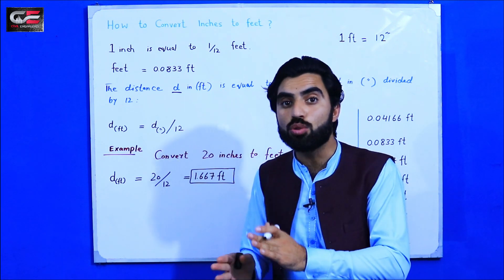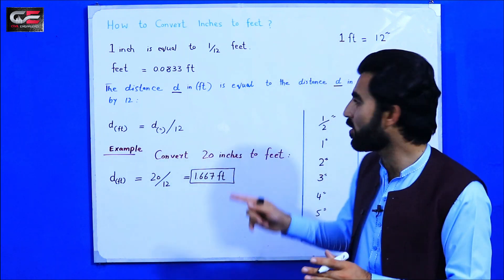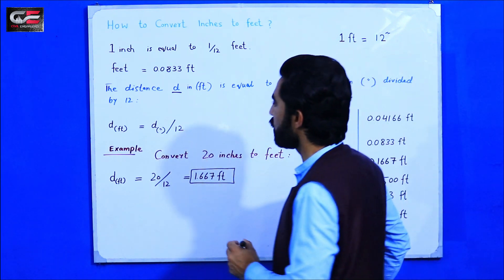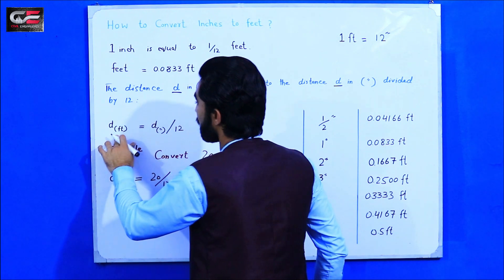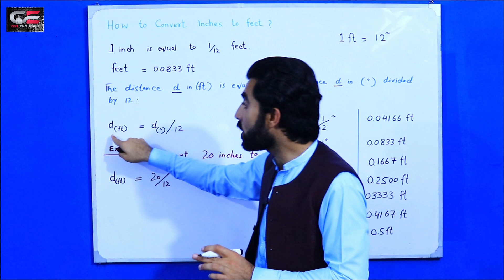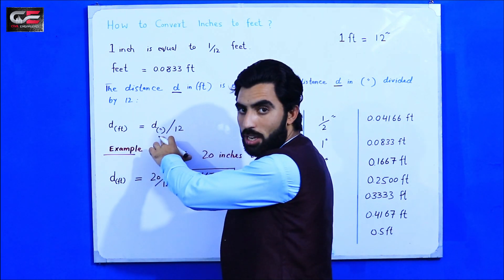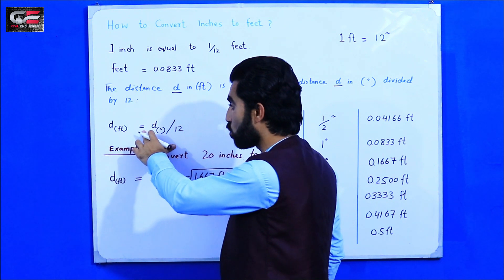Distance d in feet is what we require. Distance d in feet is equal to distance d in inches divided by 12. Okay, this is the formula for conversion.